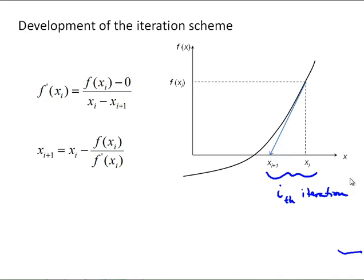And the slope then, f prime of x that we use there can be written as the rise, which would be f at x sub i minus 0, over the run, which is x sub i minus x sub i plus 1.